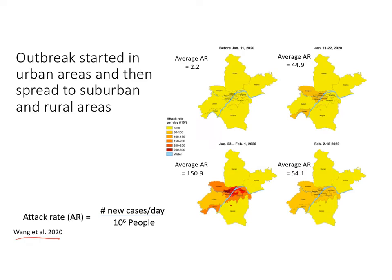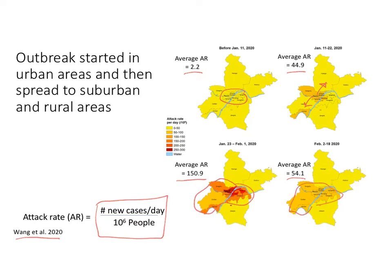Looking at the attack rates — new cases per day per 10^6 people — they went from 2.2 across the entire area in Period 1, up to 44.9 in Period 2, further up to 150.9 in Period 3, and then back down to 54.1 in Period 4. We can also see that cases started within central urban Wuhan and then moved outward before coming more under control in the latter stages.